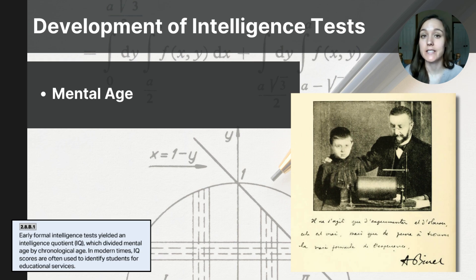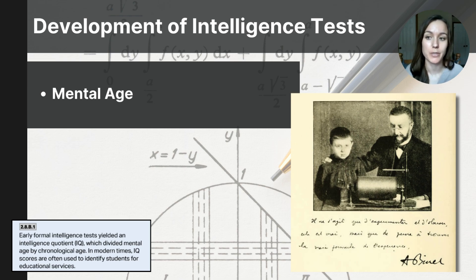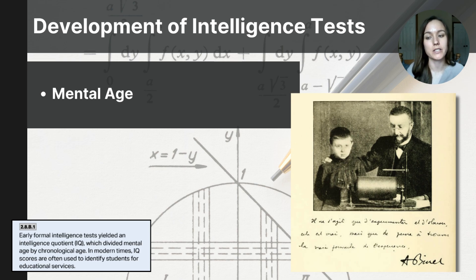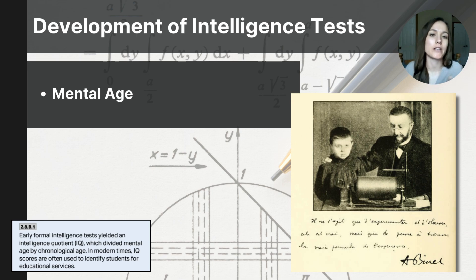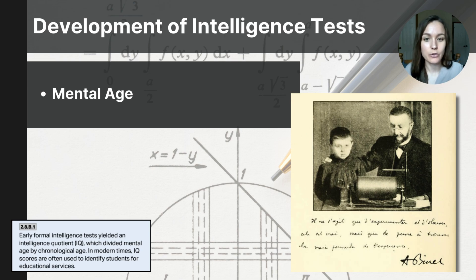Now that we've discussed theories about what comprises intelligence, let's go over how intelligence has been measured over time. The history of intelligence testing began in 1905 with Alfred Binet and Theodore Simon, who developed a mental age test to identify students in France needing educational support. This test measured children's cognitive abilities relative to their chronological age — that is, the actual age of the child in years. Mental age refers to the age level at which a child performs intellectually based on the average abilities of children at that age. In the accompanying photograph on screen, you can see Alfred Binet assessing the mental age of a child.